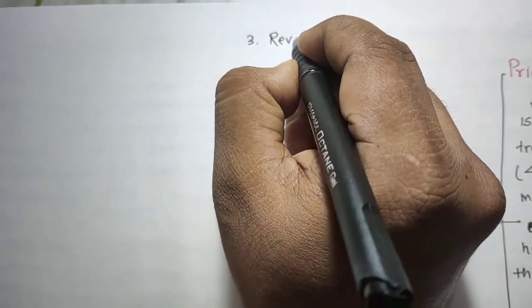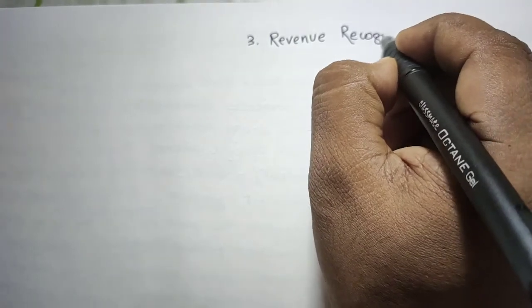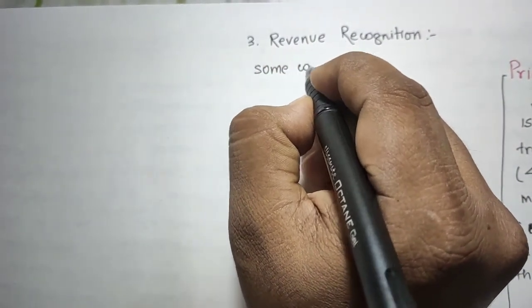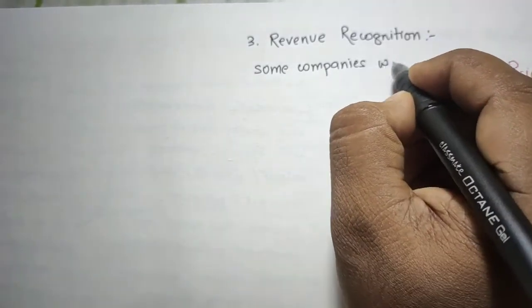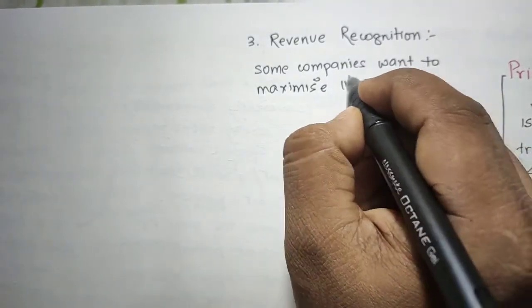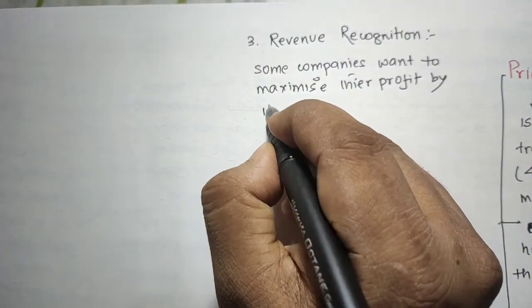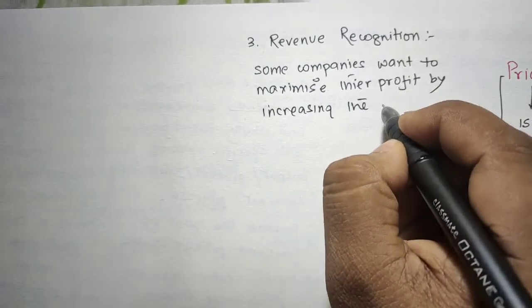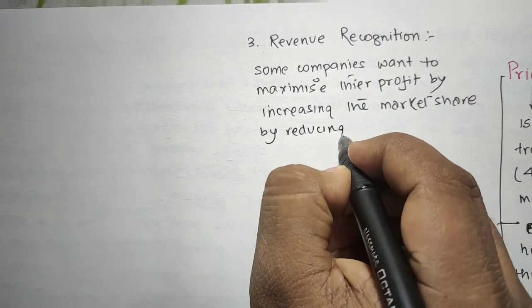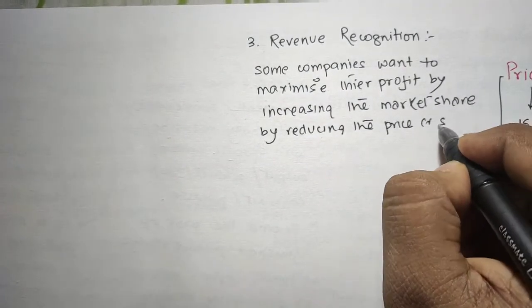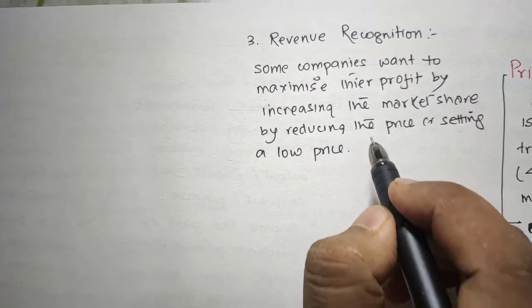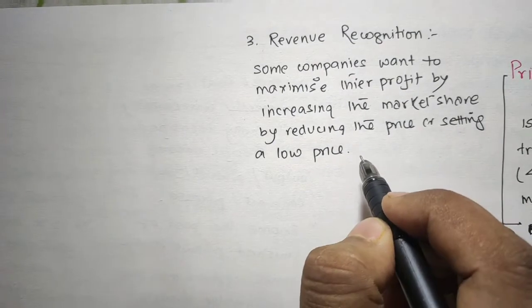The third objective is revenue recognition. Some companies want to maximize their profits by increasing the market share or by reducing the price or setting a low price. They believe that this will lead to higher sales volume, lower unit cost of production, and long-term profit.